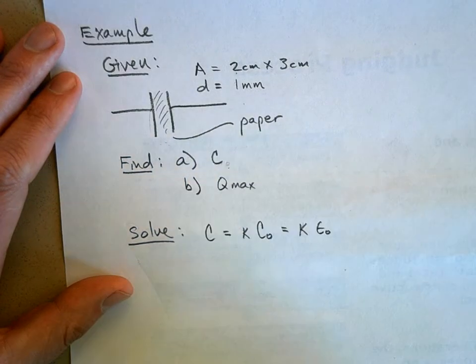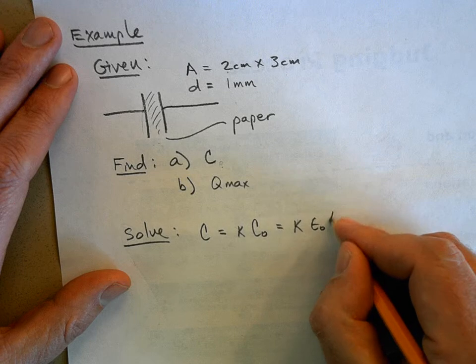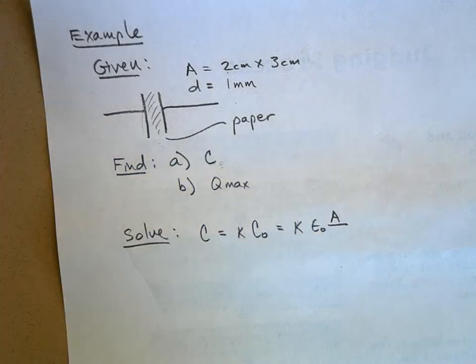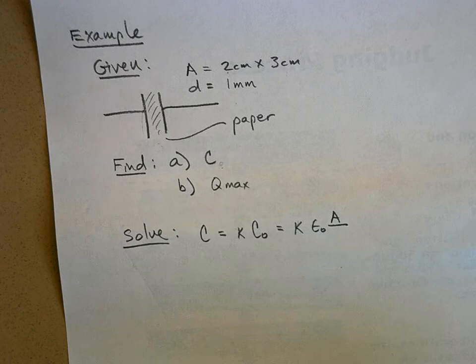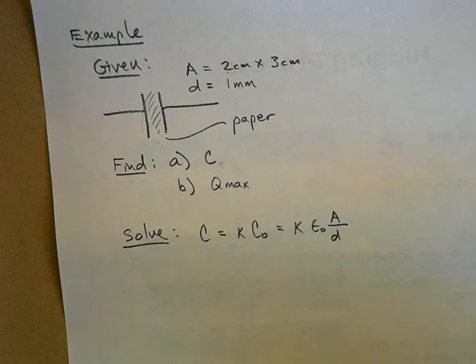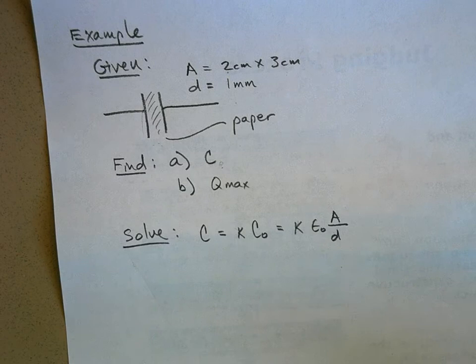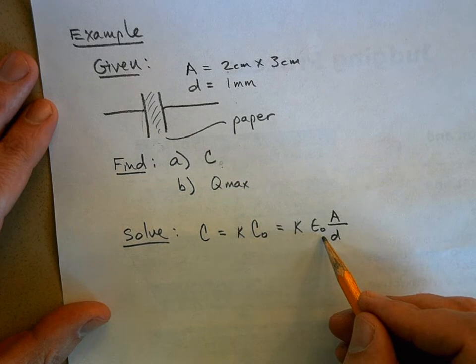Well, it's epsilon naught times the area. Right, the greater the area the more charge you can store for a given voltage drop. Divided by the distance between the plates, the farther the plates are across from each other, the weaker the electric field, the less charge you can fit on that plate.